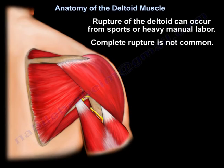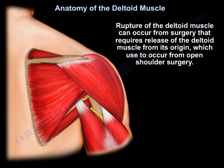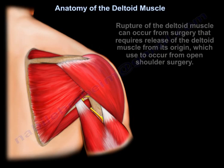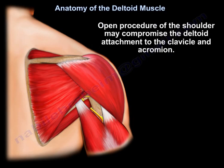Rupture of the deltoid muscle can occur from sports or heavy manual labor, though complete rupture is not common. Rupture can also occur from surgery that requires release of the deltoid muscle from its origin, which used to occur with open shoulder surgery. An open procedure of the shoulder may compromise the deltoid attachment to the clavicle and acromion.